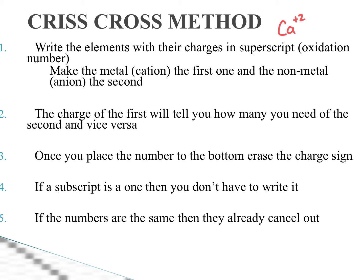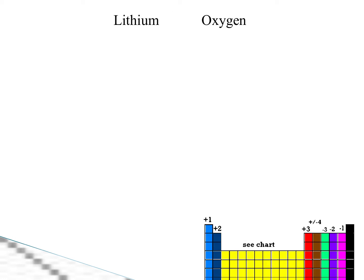So those three through five steps are just cleaning up your formula. You don't have to write the charge sign at the bottom. You don't have to write ones. And if they're the same number, then they cancel out because they are already going to have a charge of zero. So let's go ahead and work through these steps with an easy problem.